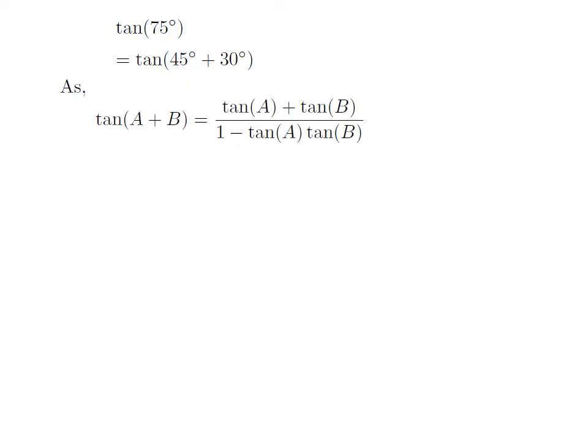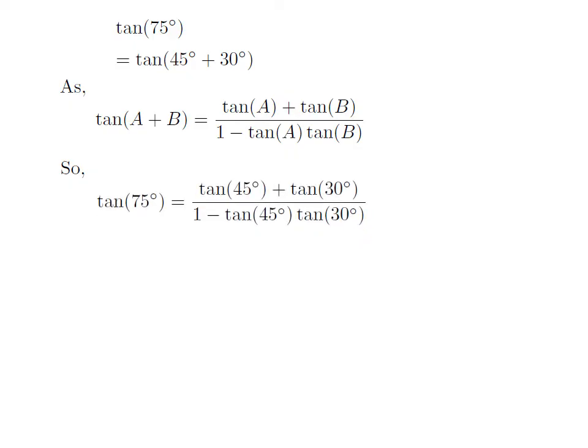As we know, the expansion of tan(A + B) is equal to tan(A) plus tan(B) divided by 1 plus tan(A) times tan(B). If you want to know how to derive this formula, the address of the video is given in the description. To find the value of tan(75°), we just have to replace tan(A) with tan(45°) and tan(B) with tan(30°) in the above formula.